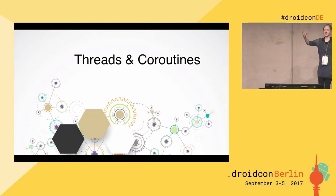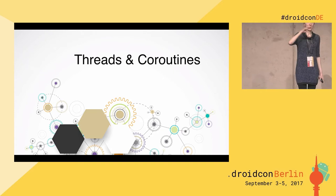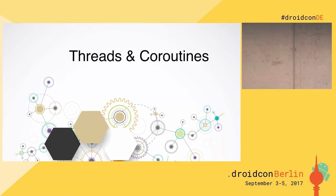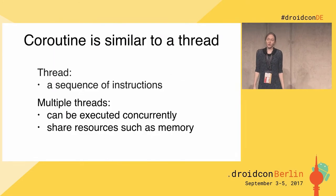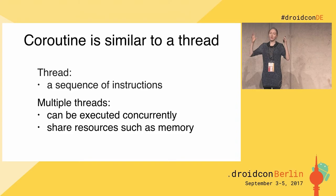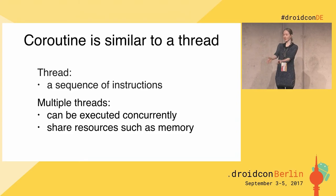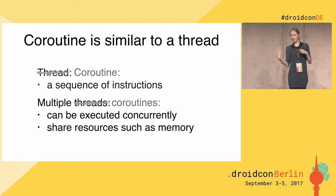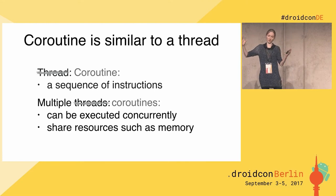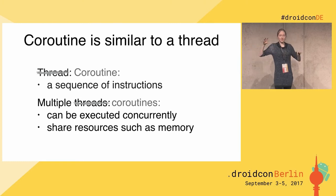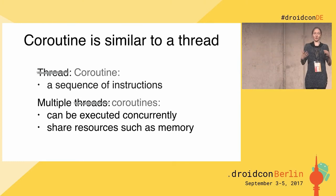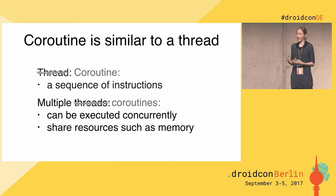Let's compare threads and coroutines — how coroutines are similar to threads, how they're different, and how they interact with each other. At a first level of understanding, a coroutine is very similar to a thread. It's not a strict definition, just a description. From the point of view of a developer, a coroutine is just a sequence of instructions. However, different coroutines can run independently and interact with each other. Threads are managed by a scheduler; coroutines are managed by the Kotlin compiler.